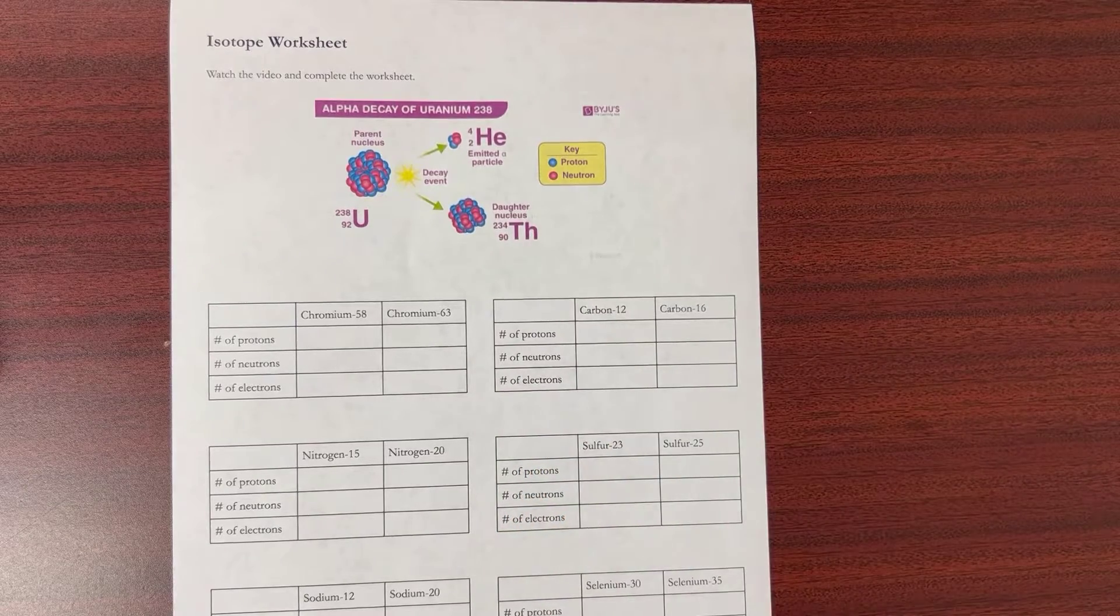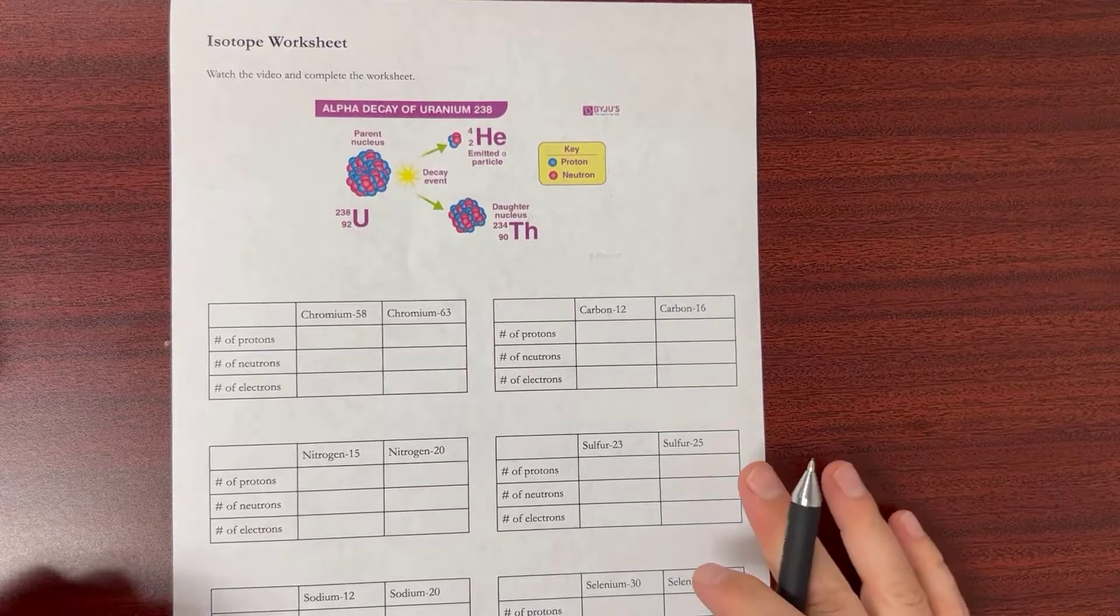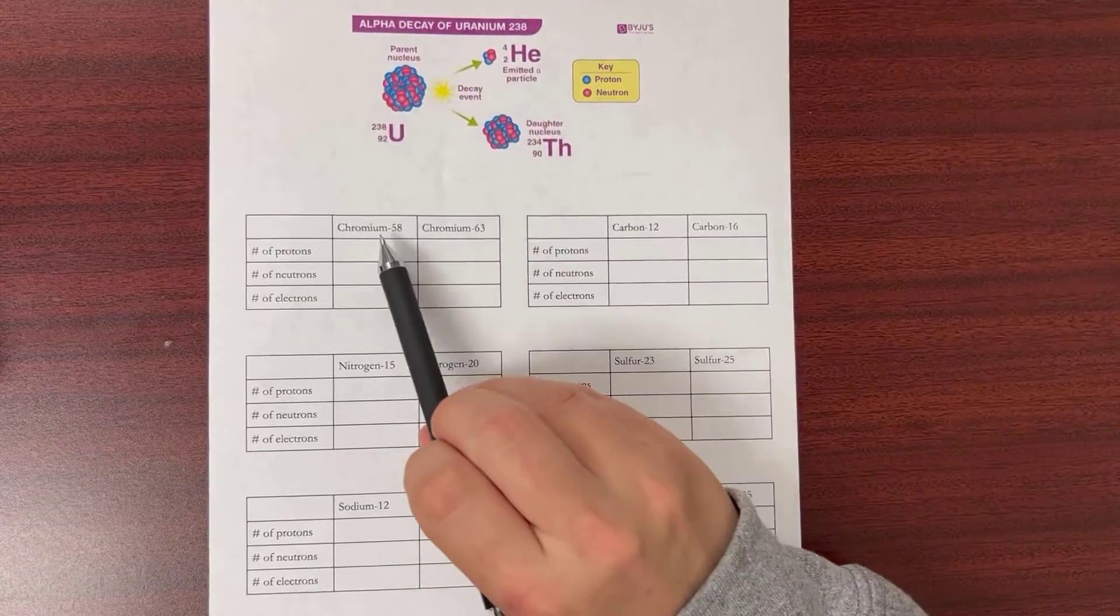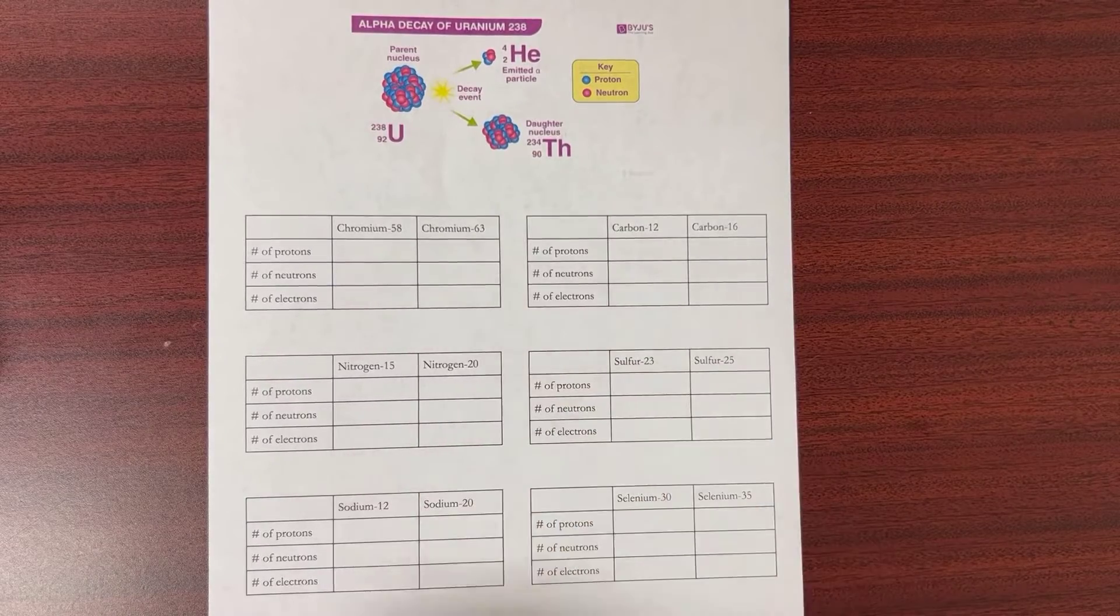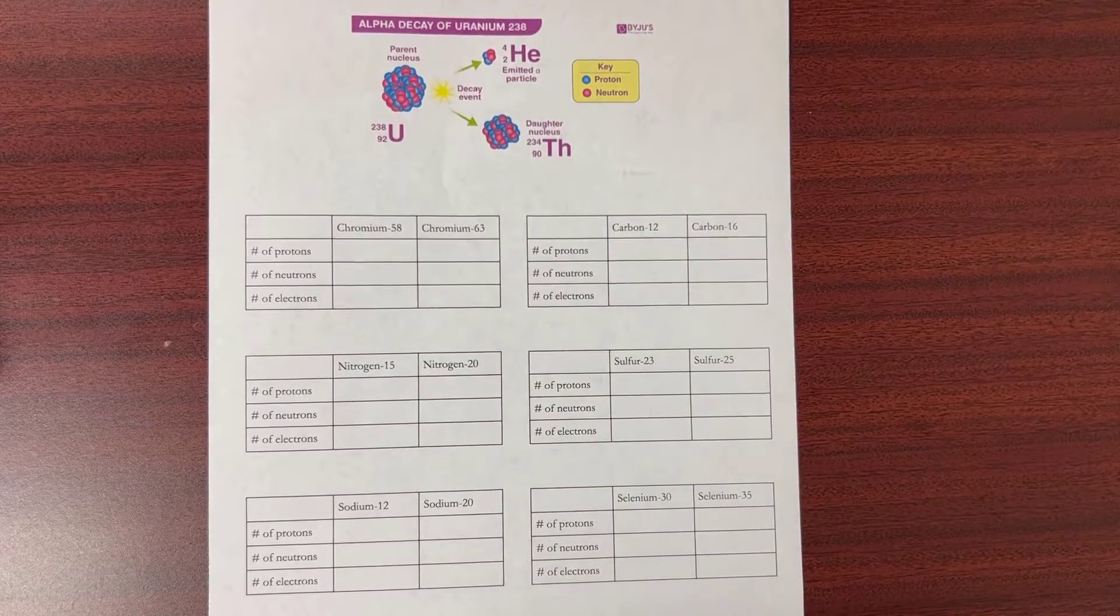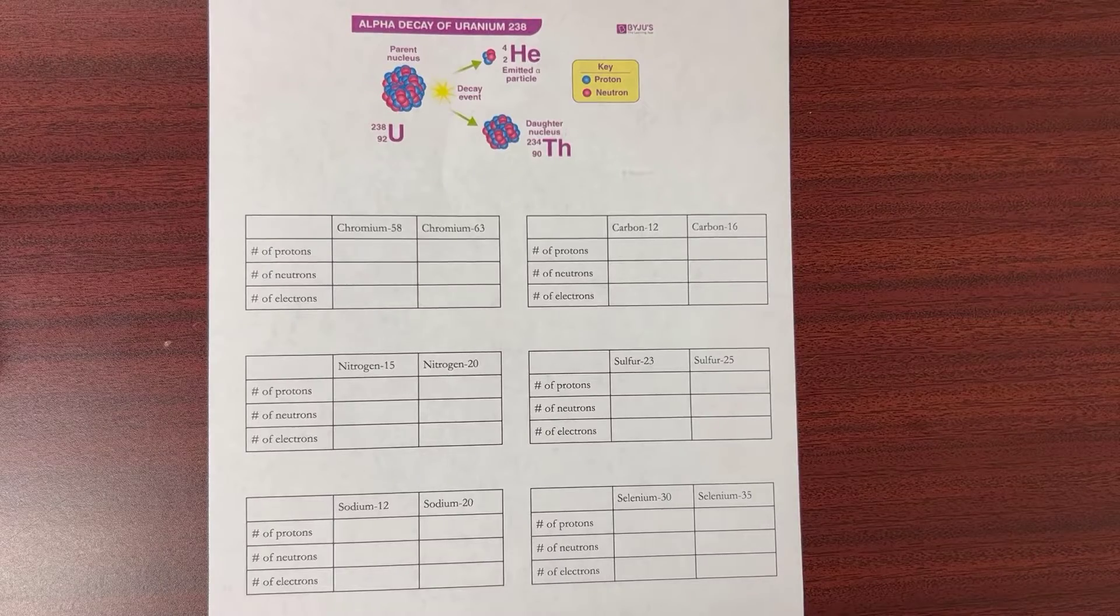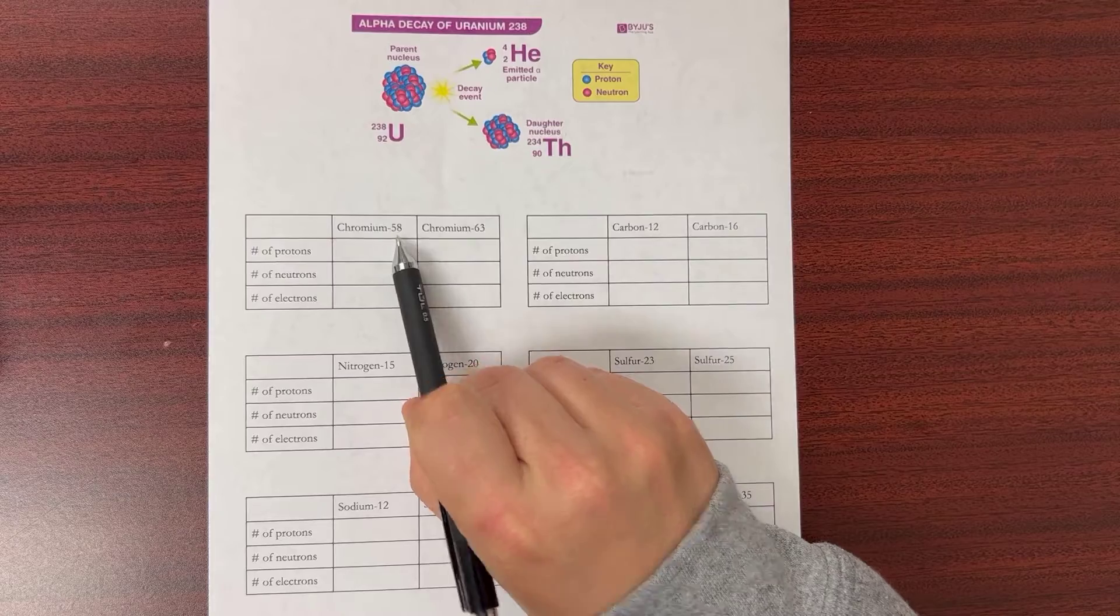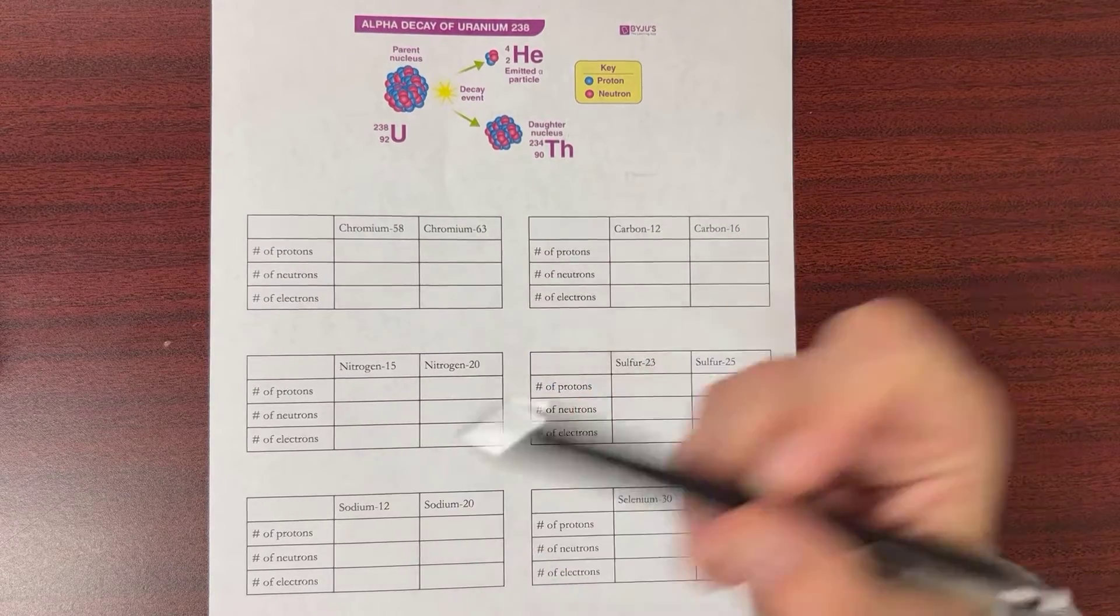With isotopes, isotopes are elements like chromium here that have extra neutrons, and that's what makes them radioactive. So chromium-58 is your normal one, and then chromium-63 has extra neutrons making it radioactive.